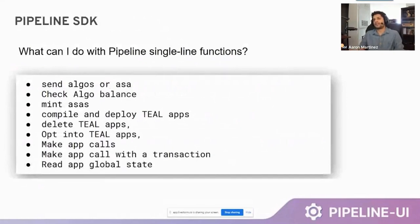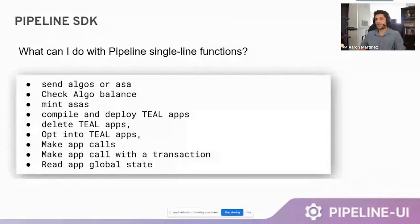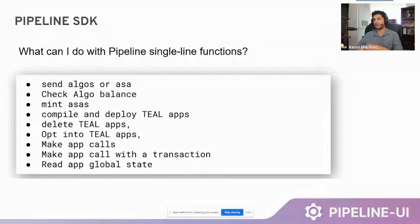What can you do with the Pipeline SDK? You can send algos or ASAs, check algo balance, mint ASAs, compile and deploy Teal apps, delete Teal apps, opt into Teal apps, make app calls, make app calls with a transaction, and read app global state. In the near future we'll be adding group transactions. Over time, we plan to integrate the entire Algo SDK and compress every different type of transaction array into as small a package as possible, allowing easy use with the largest range of applications.